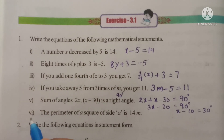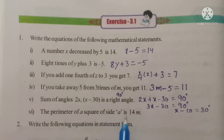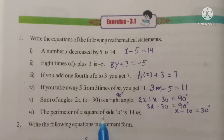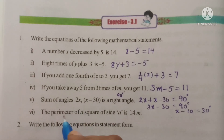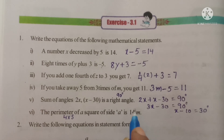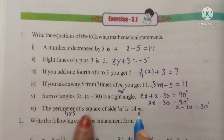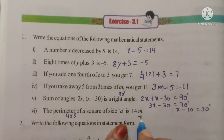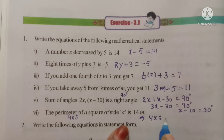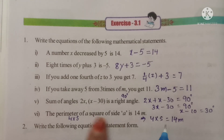Let's see question number 6: the perimeter of a square of side A is 14 meters. The perimeter of a square formula is 4 into side. The perimeter is given as 14 meters and we don't know the side. So the equation will be 4 into S is equal to 14 meters. So 4S is equal to 14 is the answer.